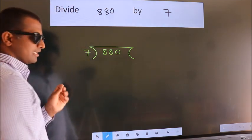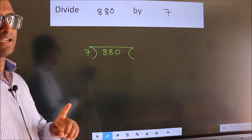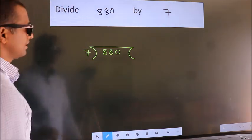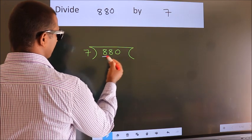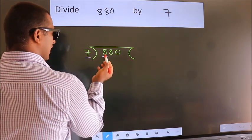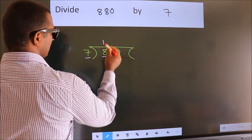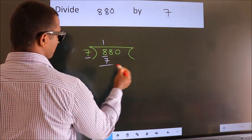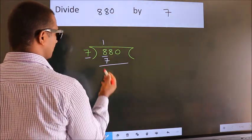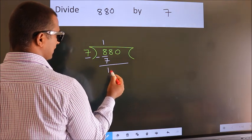This is step 1. Next, here we have 8, here 7. A number close to 8 in the 7 table is 7 once 7. Now we subtract and get 1.